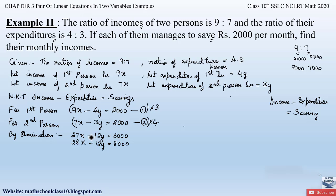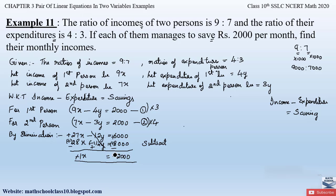The y coefficients are equal with the same sign, so we subtract the equations. Changing the sign of equation 2: 27x minus 12y equals 6000, minus 28x plus 12y equals minus 8000. The 12y terms cancel. We get 27x minus 28x equals 6000 minus 8000, which gives minus x equals minus 2000, so x equals 2000.